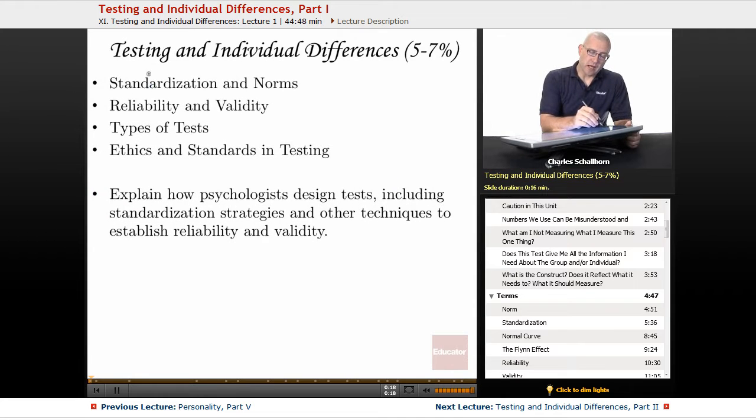First, from the College Board, testing and individual differences is 5 to 7% on your multiple choice portion. So when we see these questions, it's only going to be out of 100 questions between 5 and 7 in that neighborhood.